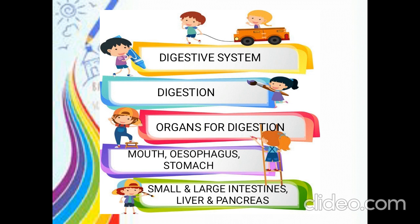So coming to stomach. Inside the stomach, there is some digestive liquid present. With the help of that liquid, the food will get digested into a thick paste, and then it will be sent to small intestine for further digestion. In small intestine, the digestive liquids from liver and pancreas make the food digest well, and the nutrients from the food will be absorbed.